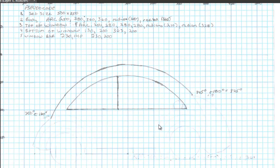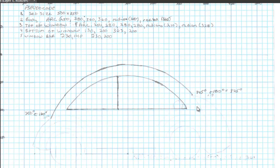I used my protractor on this and determined that the top of the window started at the same center point of 250 by 280, but the width and height of the circle were 280 by 280, and I got my radians. Reading my protractor and adding to the 180 degrees, I got 210 degrees and 325 degrees.